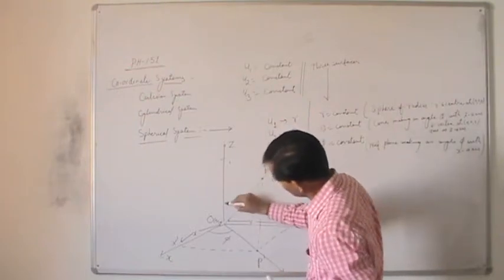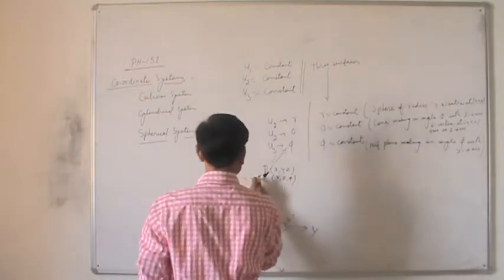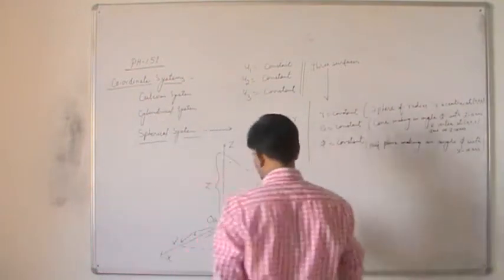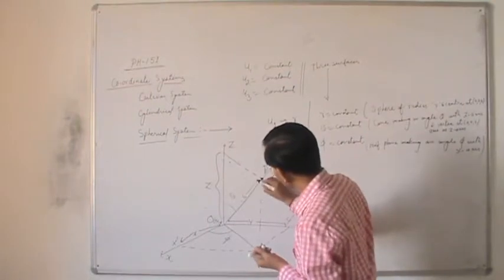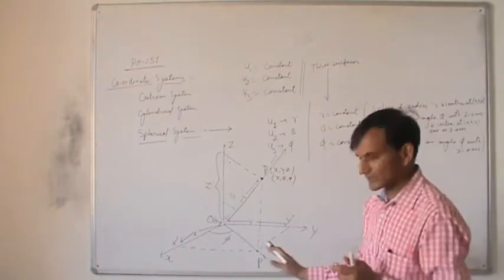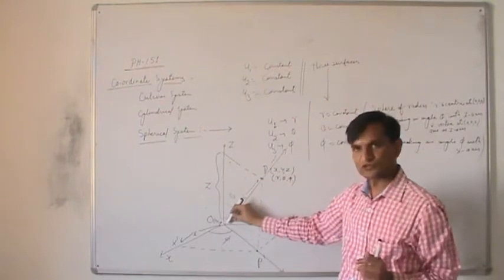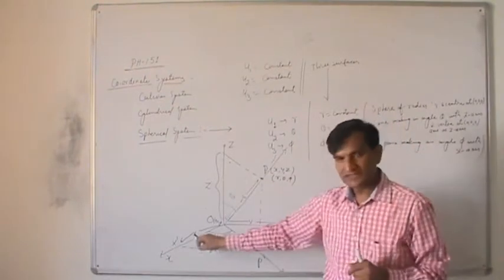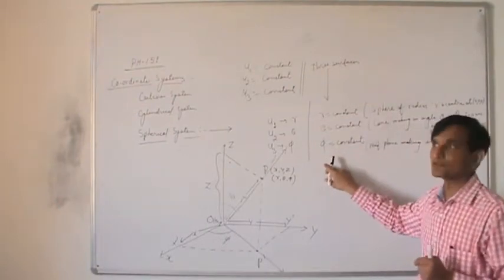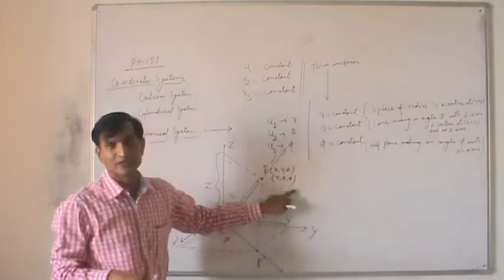Theta is basically representing the angle that the line joining point P to the origin makes with the Z axis. Phi is the angle with the X axis. R is the radius of the sphere. By considering these three surfaces, they intersect at a unique point — that unique point is your desired coordinate. You can use X, Y, Z or R, theta, phi to specify this point.